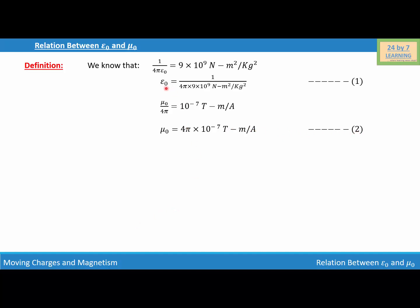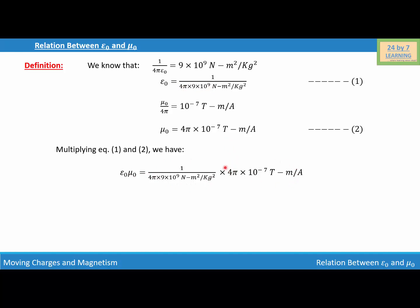Now I'm going to multiply equation 1 and equation 2. Multiplying equation 1 and 2, we have epsilon 0 times mu 0 equal to the product of their respective values. If we simplify further, we get epsilon 0 mu 0 is equal to 1 over 9 times 10 to the power 9 times 10 to the power 7 meter squared per second squared, which gives us 1 over 9 times 10 to the power 16 meter squared per second squared.